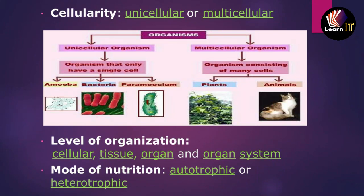The next characteristic for classification is cellularity. At the cellular level, cells have been divided into two parts: unicellular and multicellular.